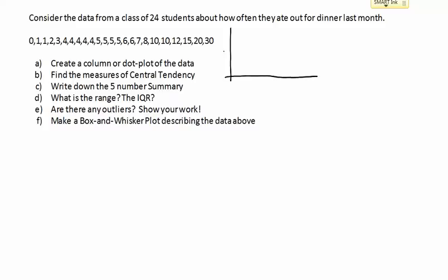I'm going to do the column first, going from 0 to 30 by ones, marking the fives so we have 5, 10, 15, 20, and 30. Now I'm actually going to do the dot plot first.